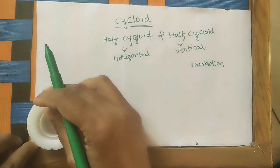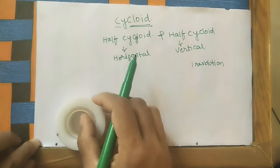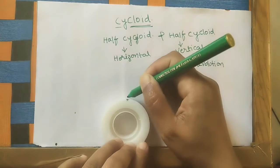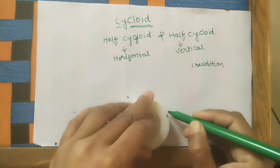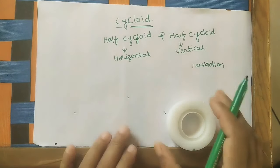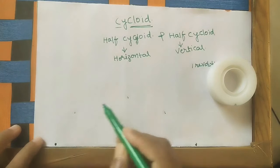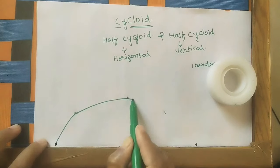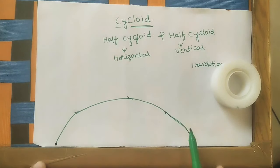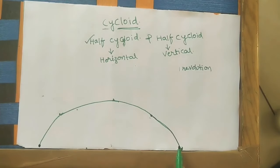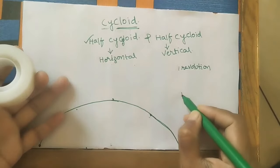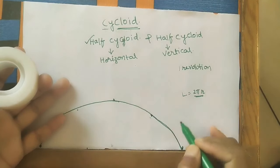Now let us see - this P point is moving with the circle as the circle is rotating. Again this P point is touching the horizontal surface. From this starting point to this ending point, the circle is making one complete rotation. At both positions this point is touching the surface. Tracing the path means marking the P position whenever this circle is rotating - we are tracing the path of P on the paper.